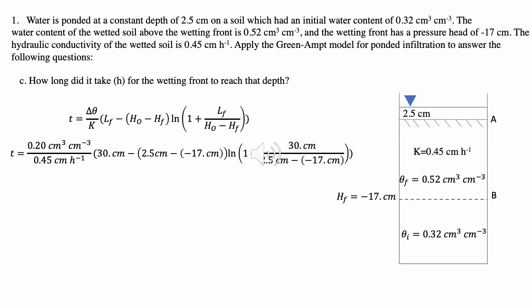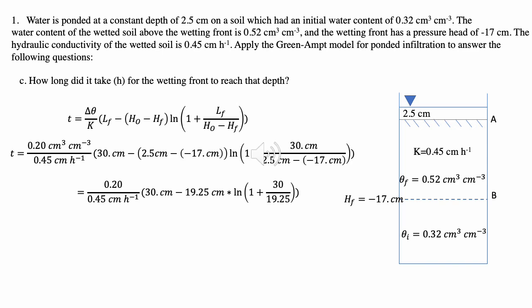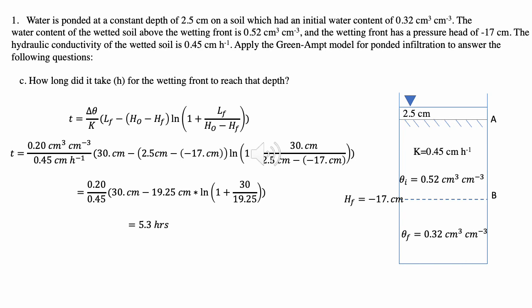Putting values into the equation: T equals 0.20 cm³/cm³ over 0.45 centimeters per hour, times parentheses 30 centimeters minus, in another set of parentheses, 2.5 centimeters minus negative 17 centimeters, times the natural log of 1 plus 30 centimeters over (2.5 centimeters minus negative 17 centimeters). Simplifying beforehand: 0.20 over 0.45, times 30 minus 19.25, times the natural log of 1 plus 30 over 19.25. Accounting for two significant figures, we get 5.3 hours as the time it takes for the wetting front to reach 30 centimeters.